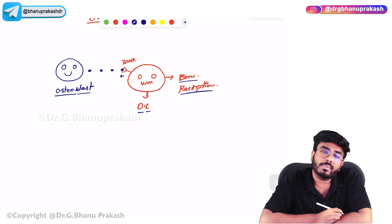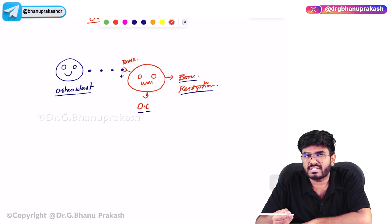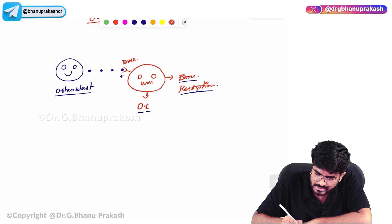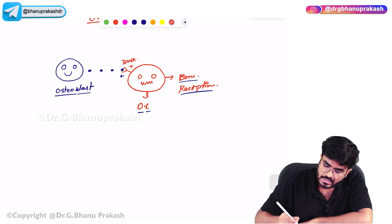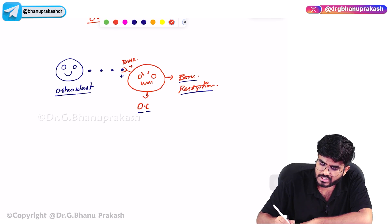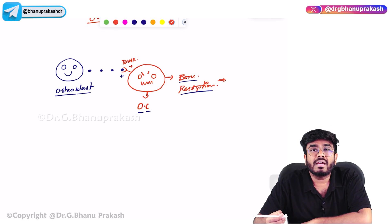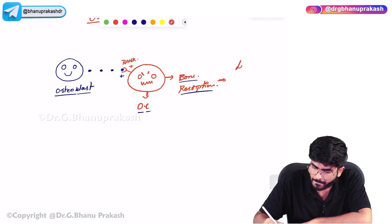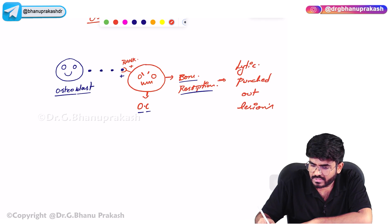In multiple myeloma, the neoplastic plasma cells come and activate RANK Ligand. So the plasma cells are activating this RANK Ligand, which leads to uncontrolled, excessive bone resorption. Whenever there is too much bone resorption, there will be lytic, punched-out lesions.